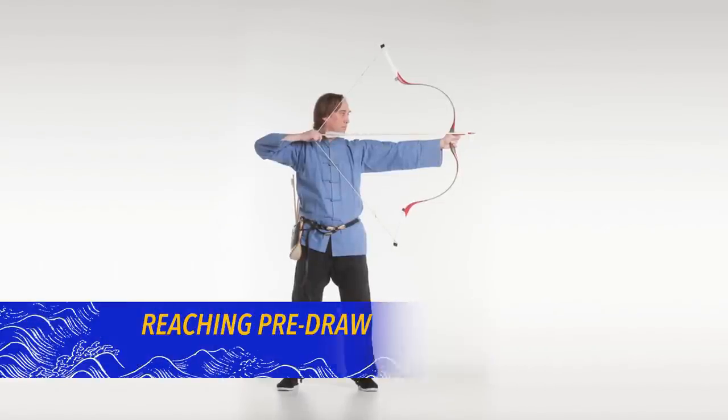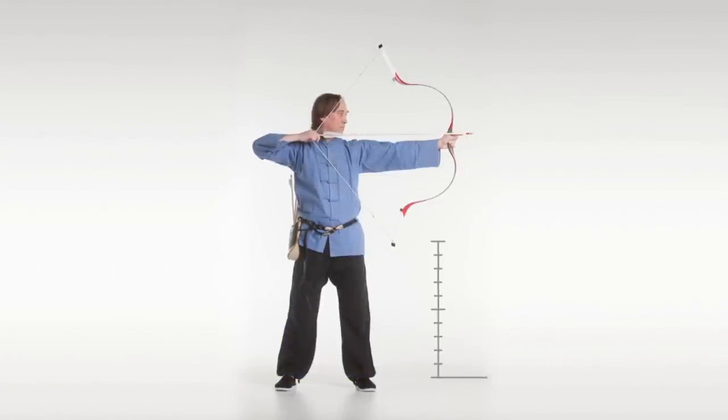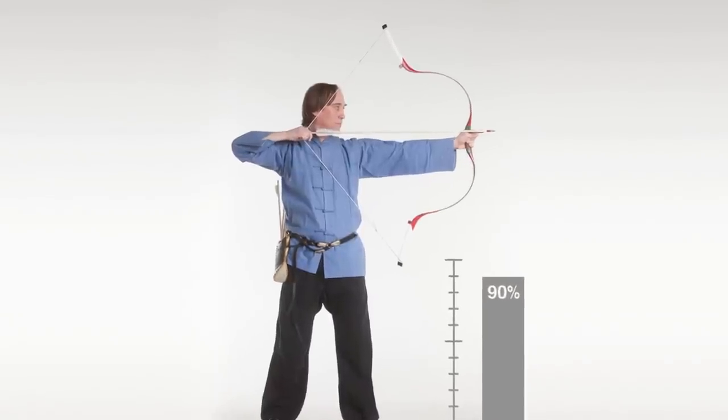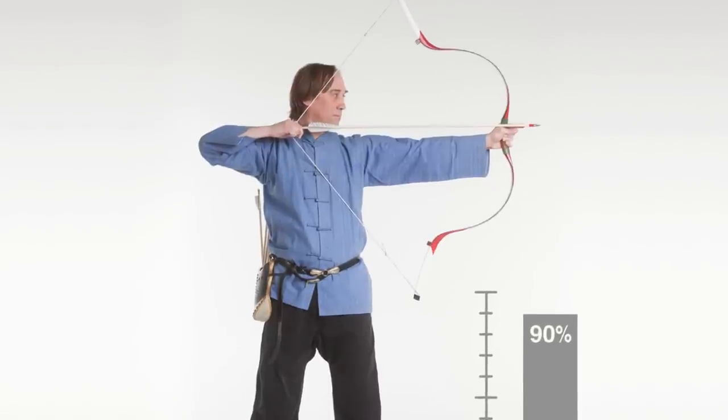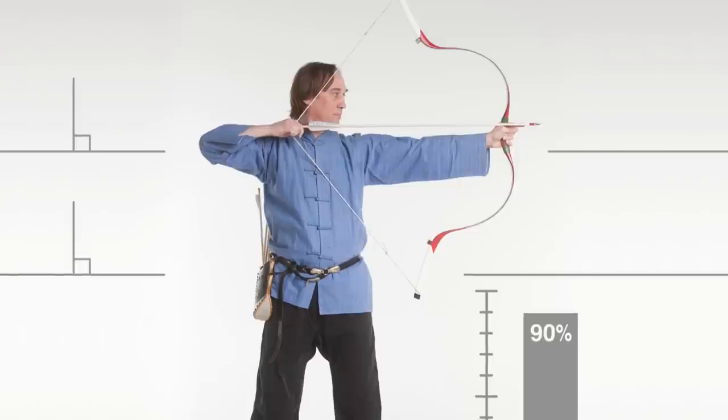Continue drawing the bow until you reach the pre-draw position, a point 90% through the entire motion. At this pre-draw position, the bow and string arm should be level. The shoulder and hips are likewise level.